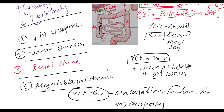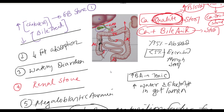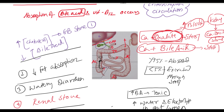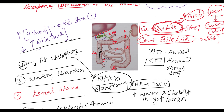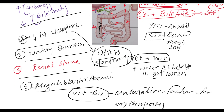In short, what are the consequences of ileal resection? Number one: formation of gallbladder stones — cholelithiasis. Number two: decreased fat absorption, which leads to weight loss and steatorrhea. Number three: watery diarrhea. Number four: renal stones. And number five: megaloblastic anemia.